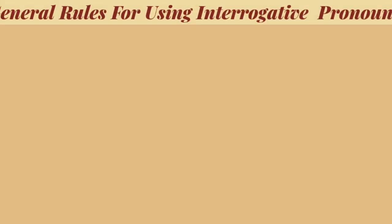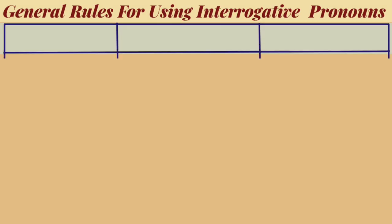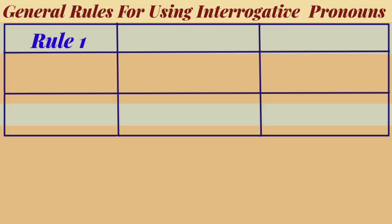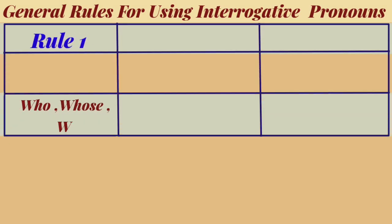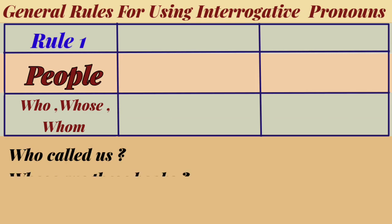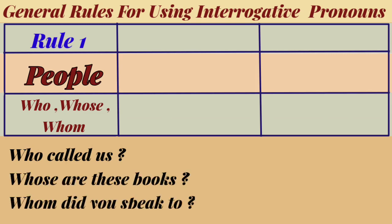Let's learn some general rules for using interrogative pronouns. Rule number one: who, whose, and whom are used to talk about people only. For example, who called us? Whose are these books? Whom did you speak to?